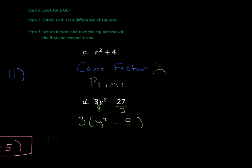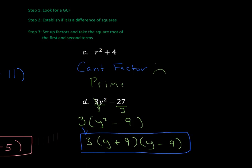I said yes to all three questions, so let's factor. The square root of the first term is y, and the square root of the second term is 3. One factor gets a plus, one gets a minus, giving (y + 3)(y − 3). Don't forget to bring that GCF of 3 out in front — we have to carry it down to our final answer: 3(y + 3)(y − 3).